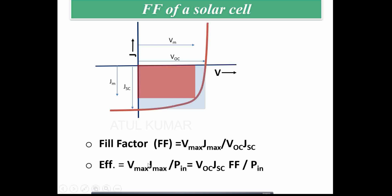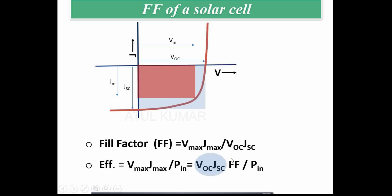VM times JM is the power output, which can also be written as VOC times JSC times the fill factor. The fill factor is a term less than 1, meaning we are only utilizing a part of VOC times JSC — not completely. That is what fill factor represents.